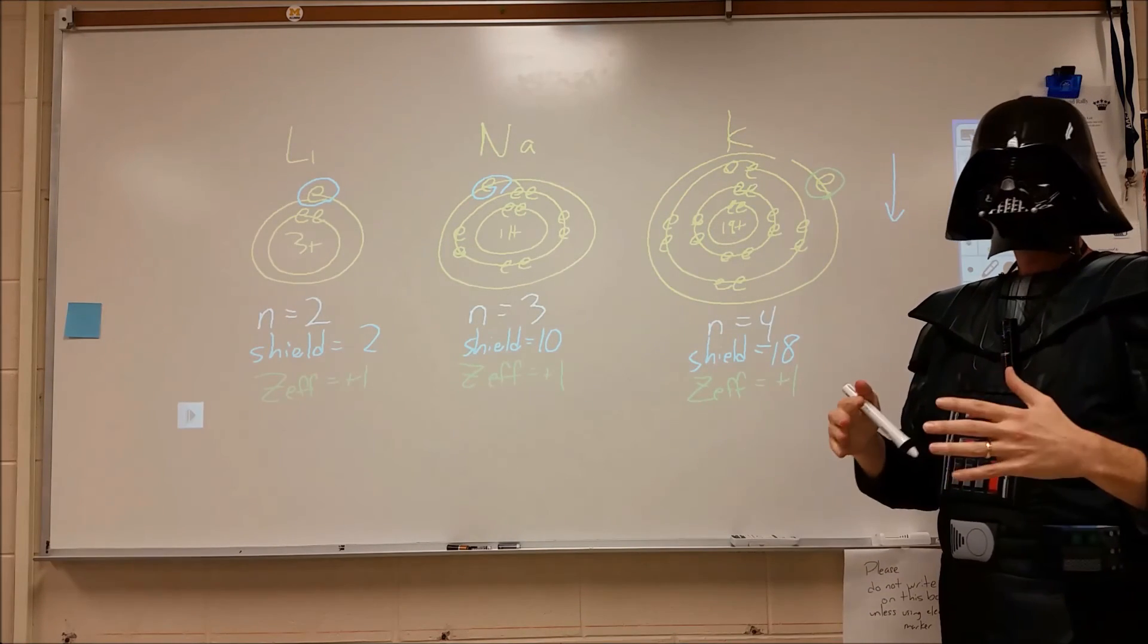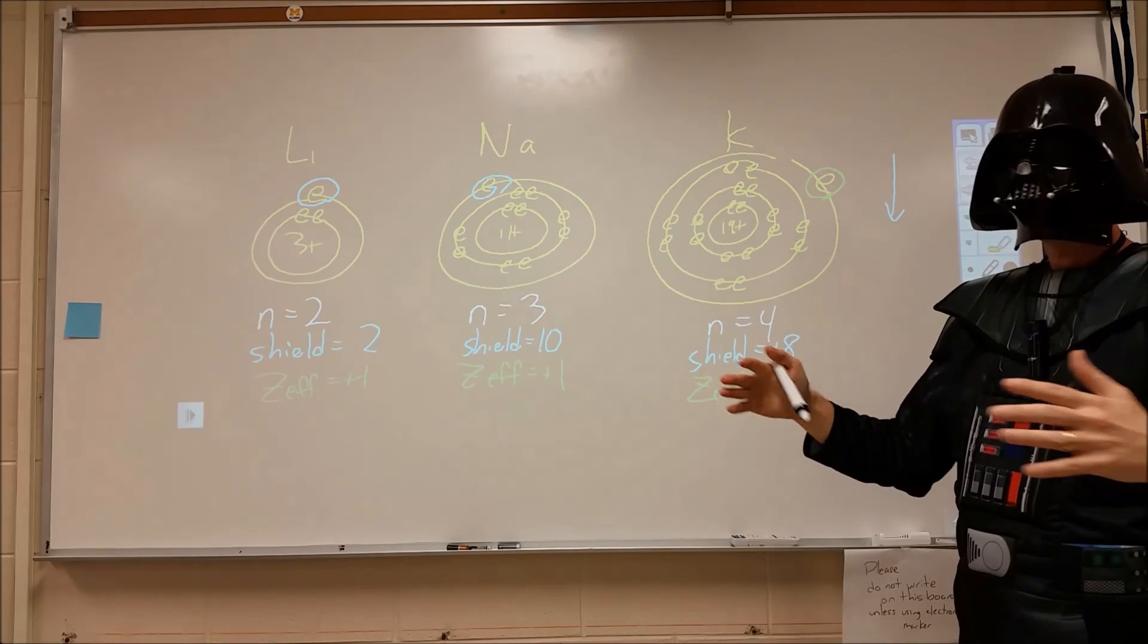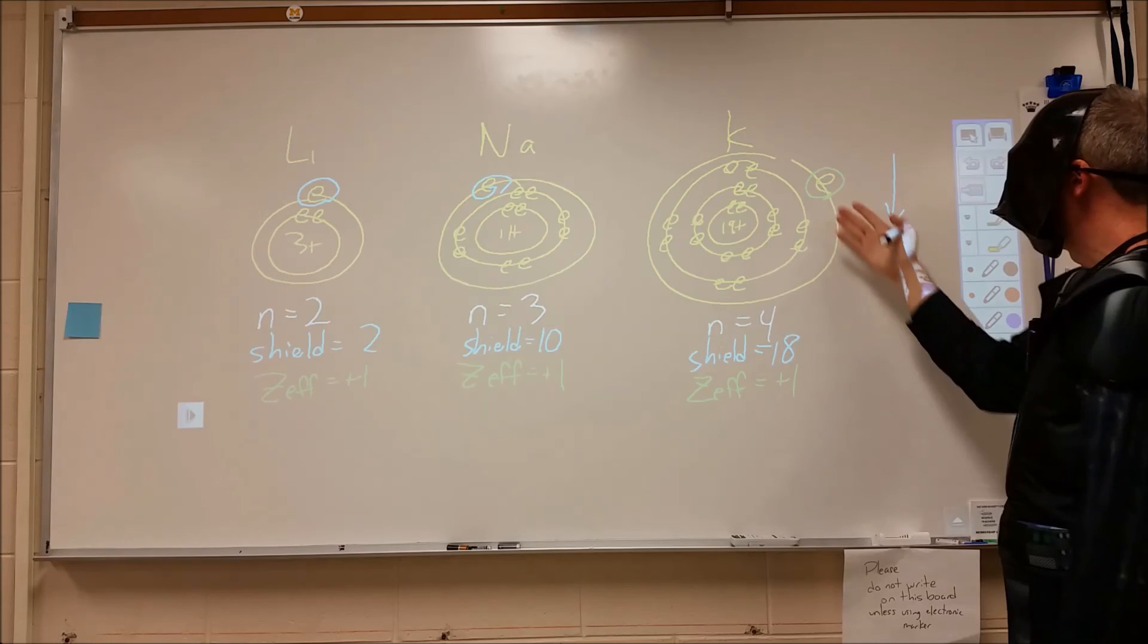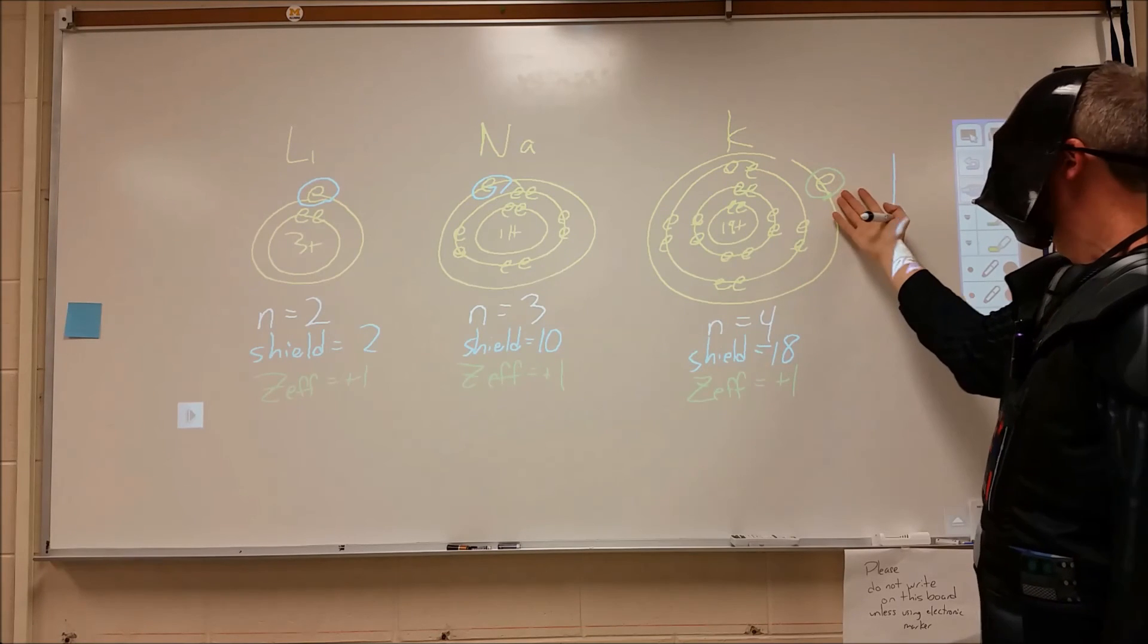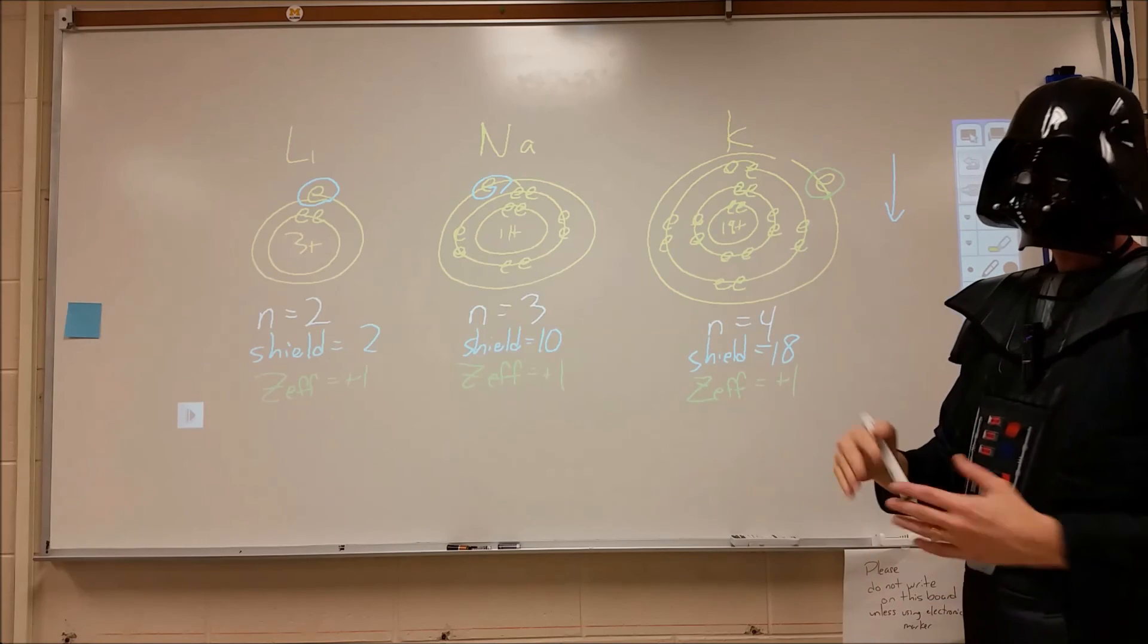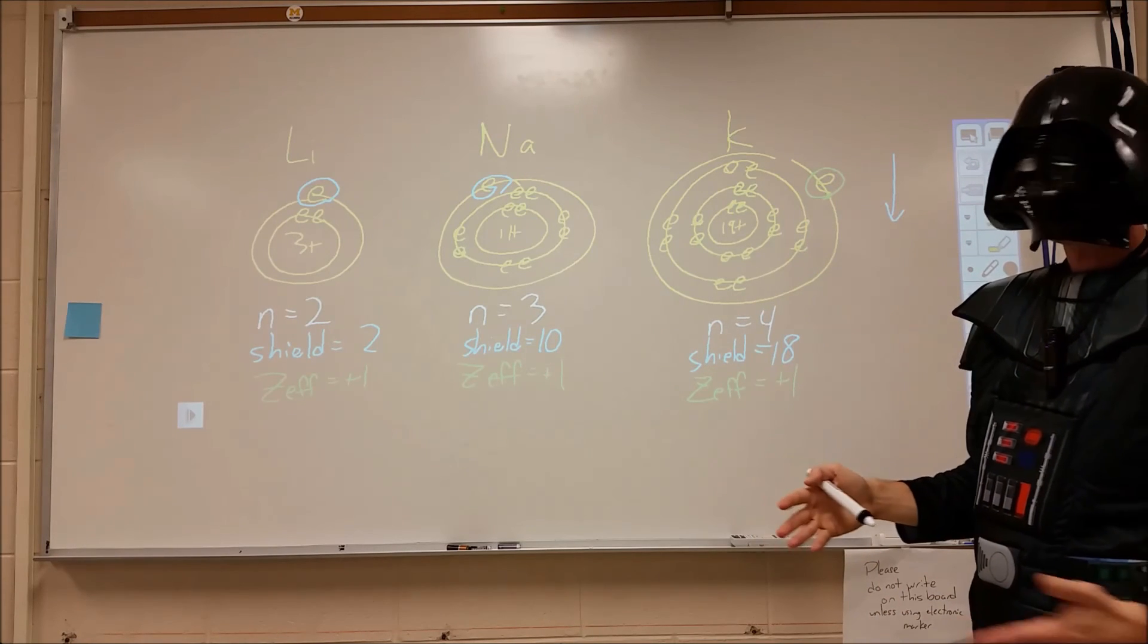So keep in mind that, generally speaking, as we increase our energy level, we're moving further and further from the atom. And so by virtue of that, we would expect the potassium valence electron to take up more space because it occupies the space farther away from the nucleus.